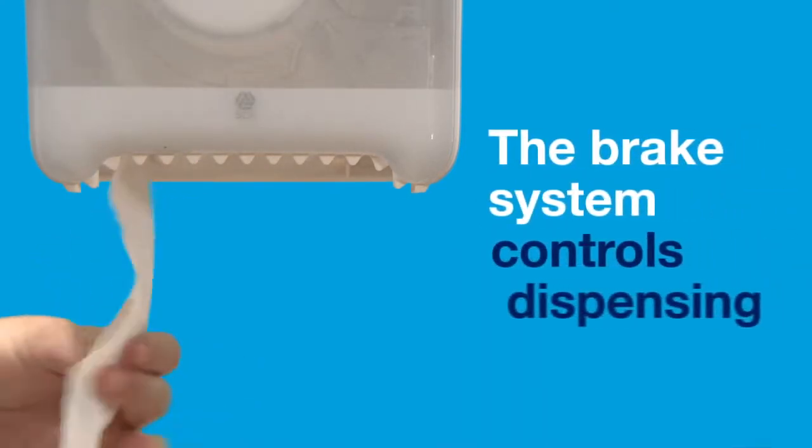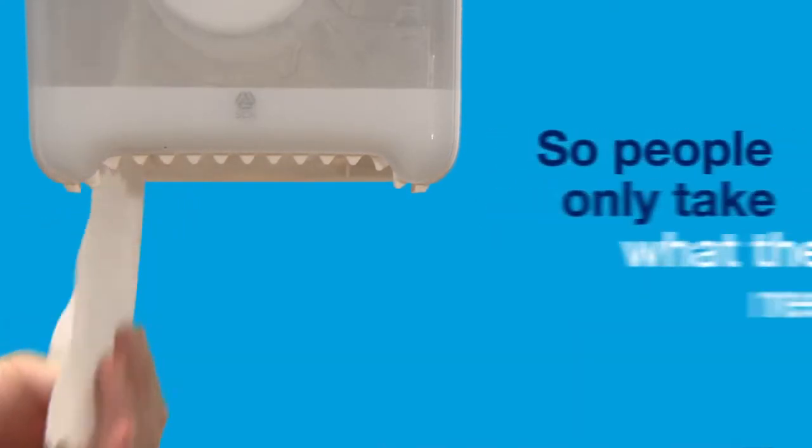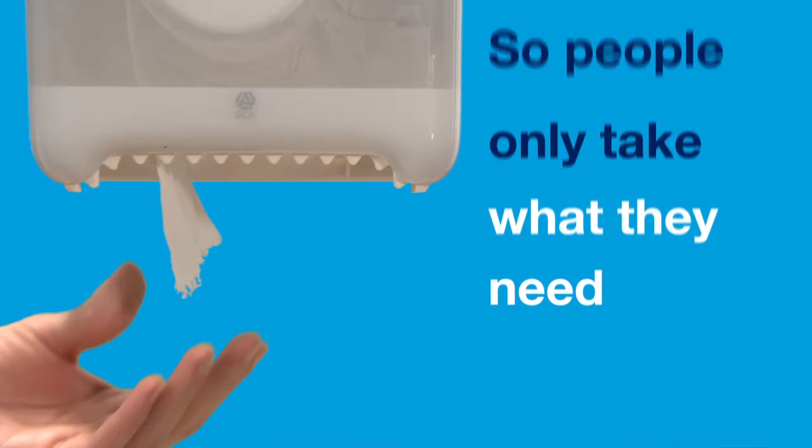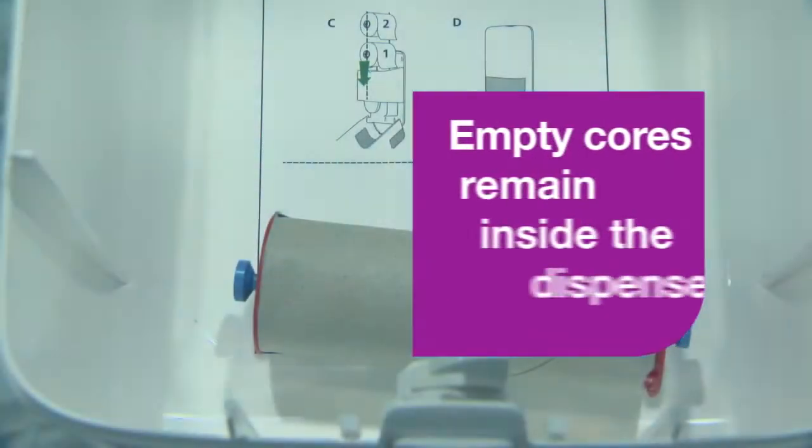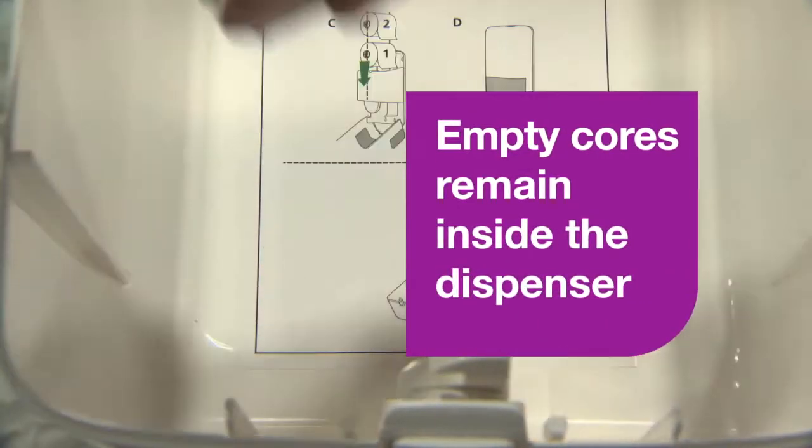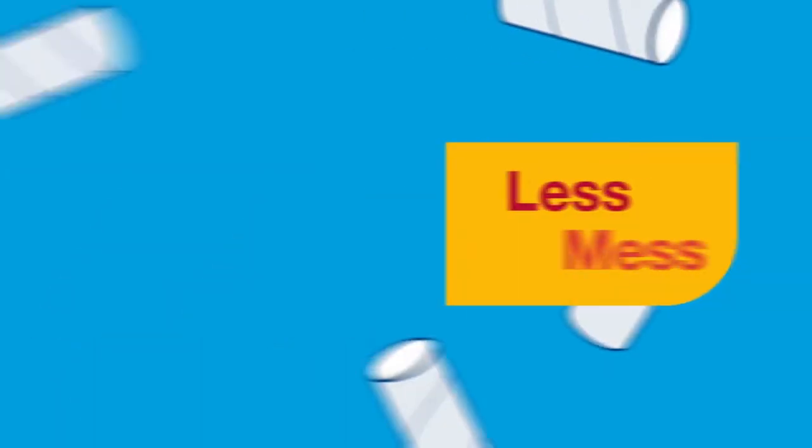And the brake system controls dispensing so people only take what they need so rolls last longer and you refill less often. The empty cores remain inside the dispenser which means less mess.